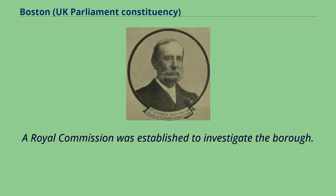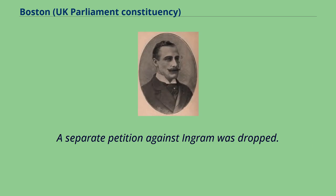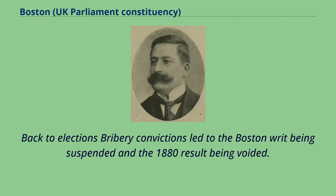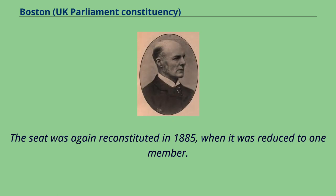A royal commission was established to investigate the borough, and a separate petition against Ingram was dropped. In 1878, Malcolm then resigned in order to contest a by-election in Argyleshire, leading to a by-election in Boston. Bribery convictions led to the Boston writ being suspended and the 1880 result being voided. The seat was again reconstituted in 1885, when it was reduced to one member.